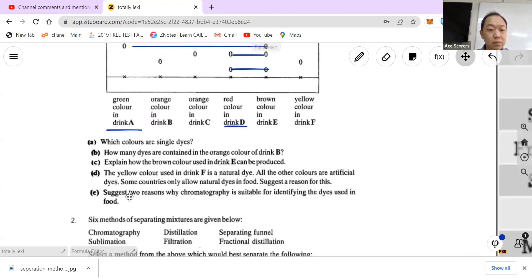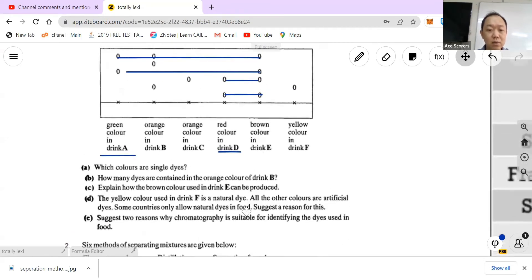Next, so the yellow color used in drink F is a natural dye, all the other colors are artificial dyes. Some countries only allow natural dyes. And the reason? Well, I think it's pretty obvious. If it's natural that means it should be edible. We do not want toxic or poisonous stuff in the food.